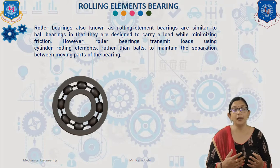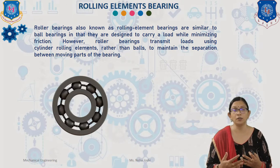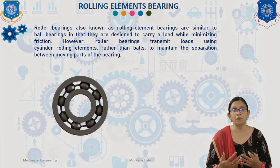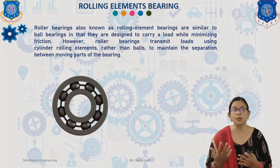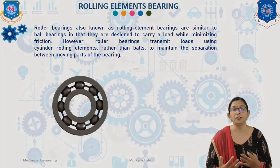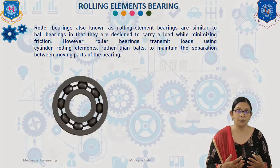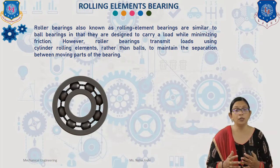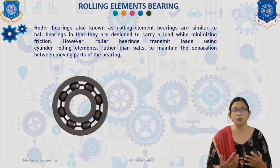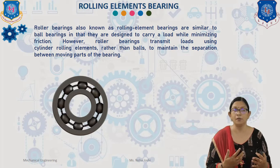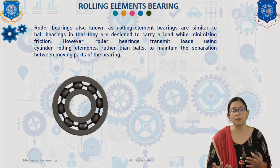Rolling element bearings find application in the auto industry, electric motors, power tools, machine tools, conveyors, aircraft, ships, land vehicles, metal drills, etc. There are more than 20,000 varieties of rolling bearings based on the material, like steel, polymer, and ceramic, with or without cage, various types of cages, and with or without seals.